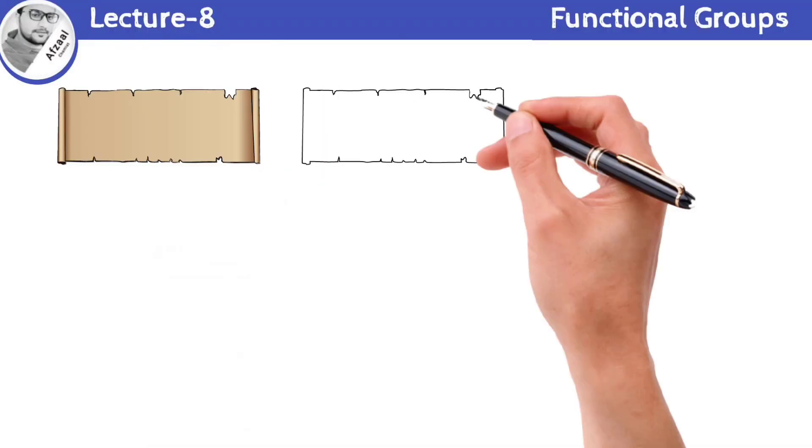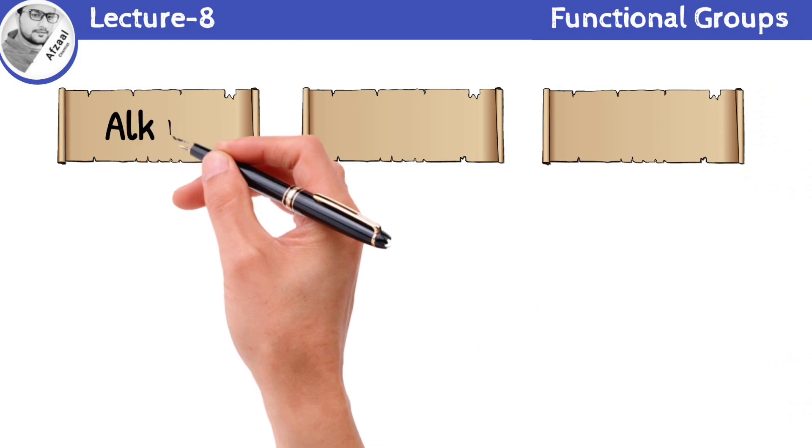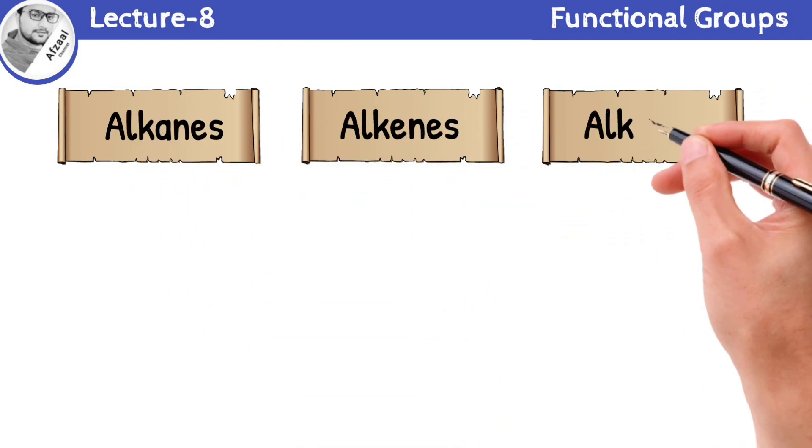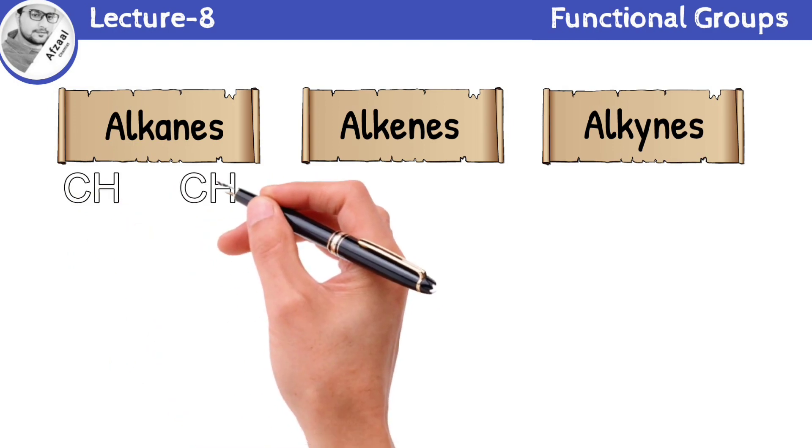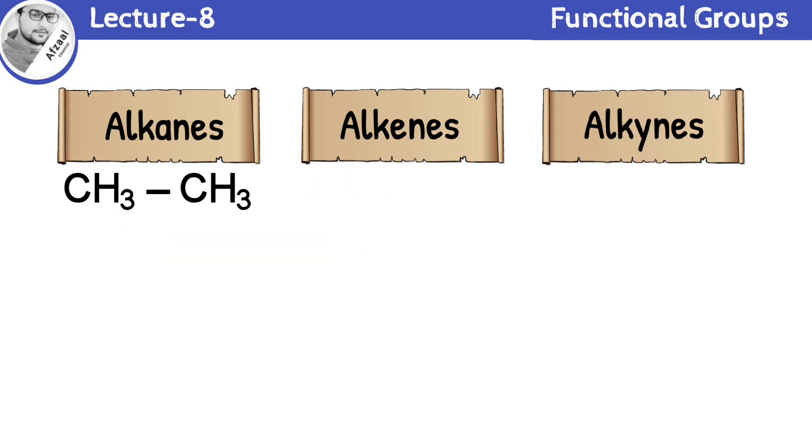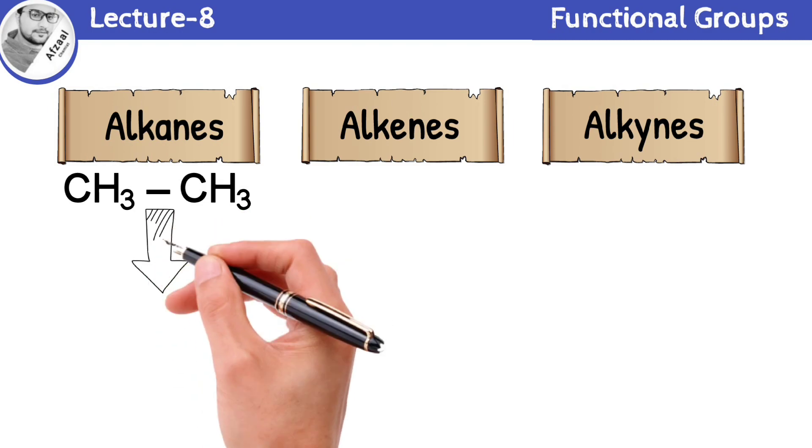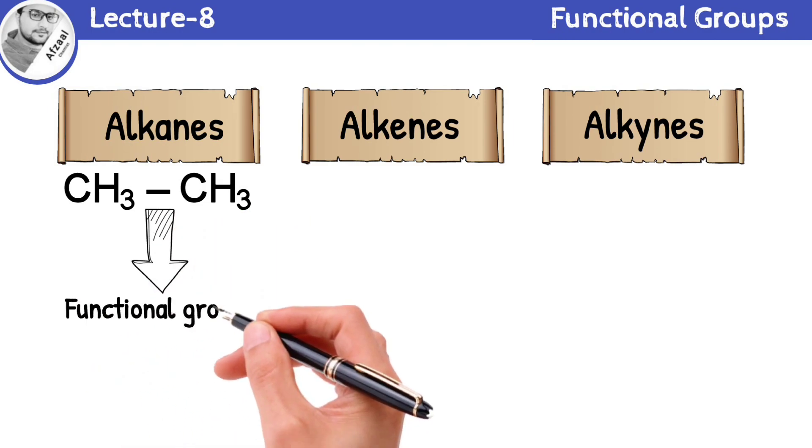Now, we are going to discuss functional groups of three major classes of organic compounds. Let's start with alkanes. These are the simplest hydrocarbons consisting of only single bonds between carbon atoms. The functional group for alkanes is simply the carbon-carbon single bond.